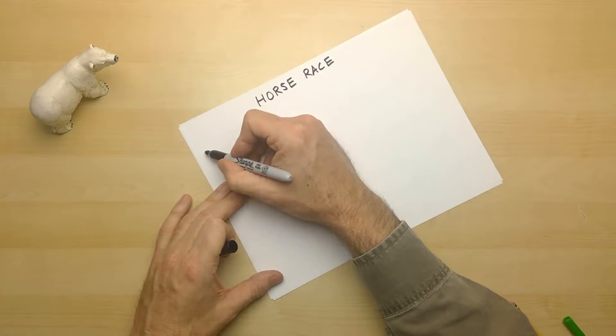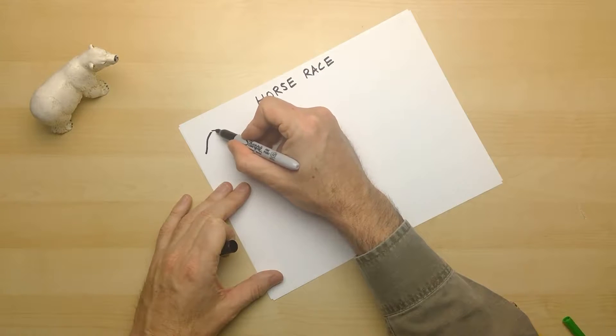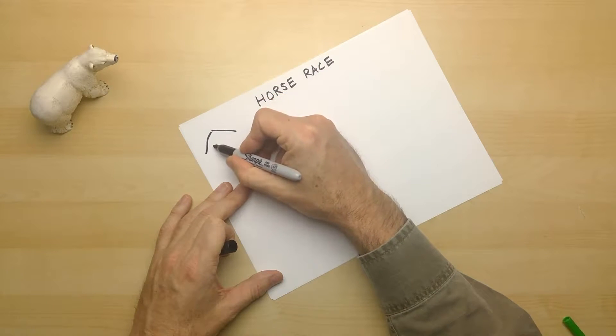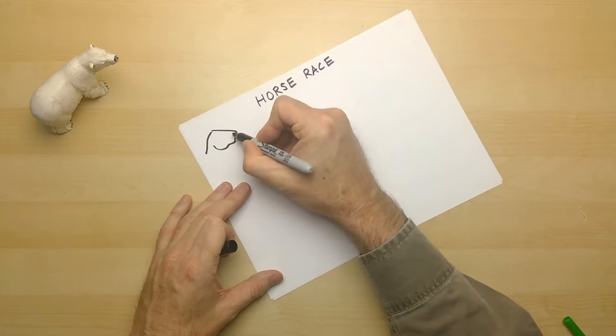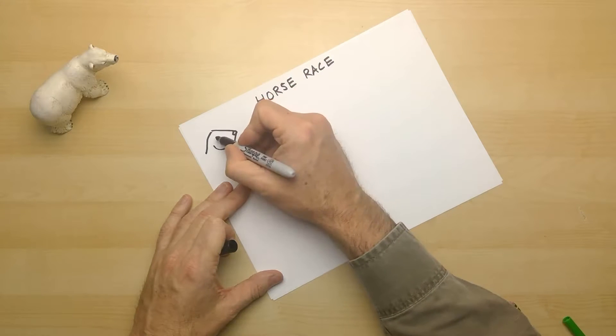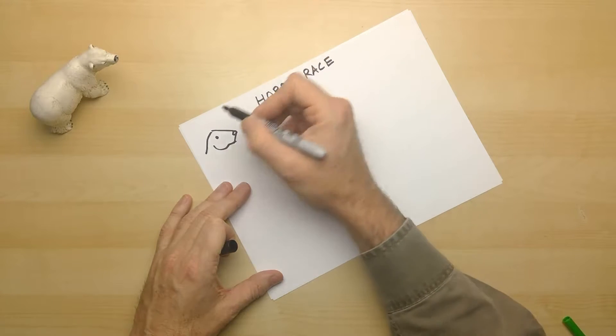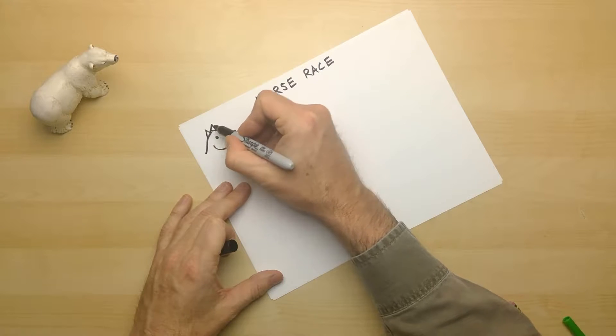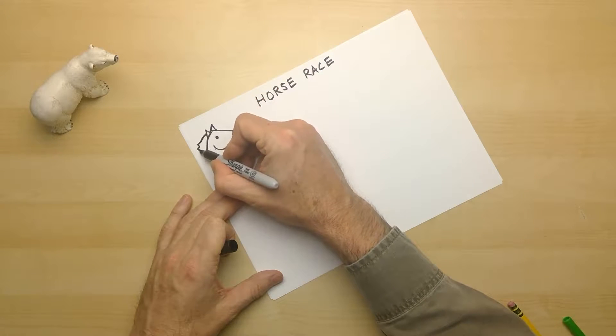And over here, let's draw a curve here. Maybe a straight line coming down like that. Another one like that. A straight line. Oh, you see what I'm drawing, right? Little circle there. An ear and an ear. And how about a flowing mane?